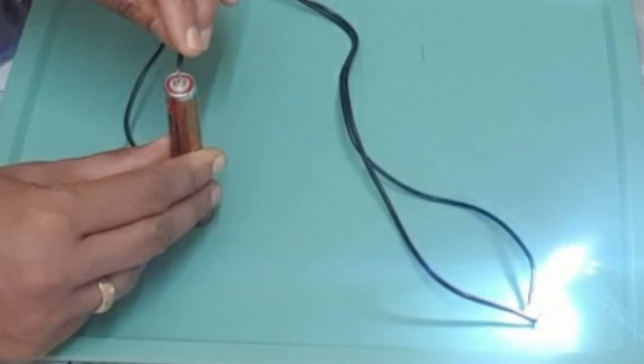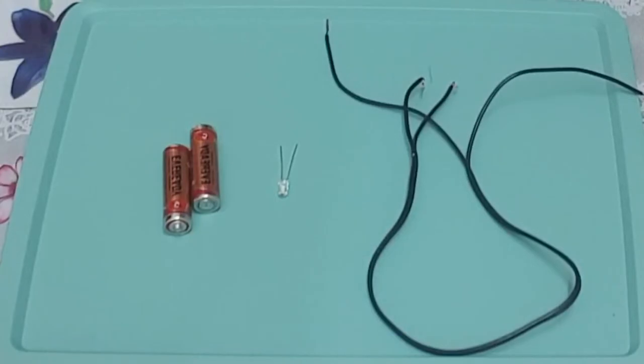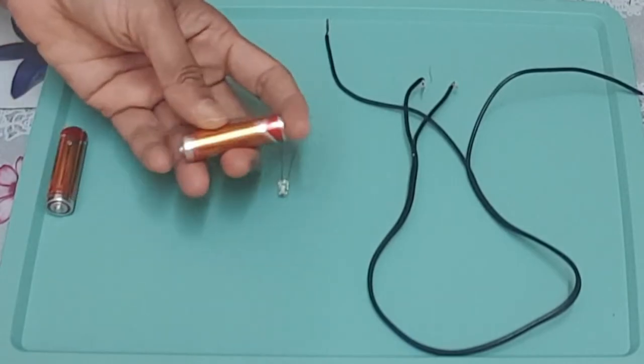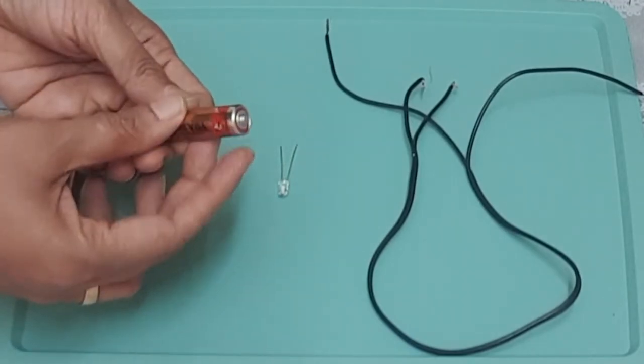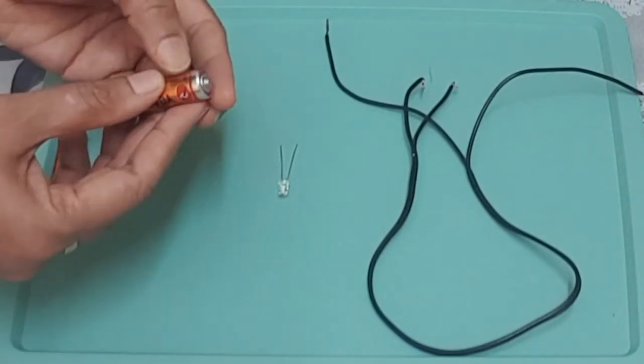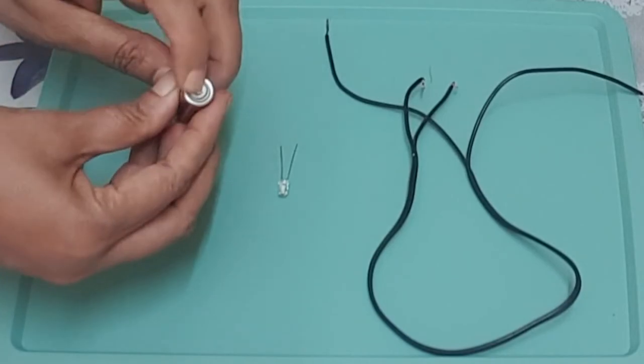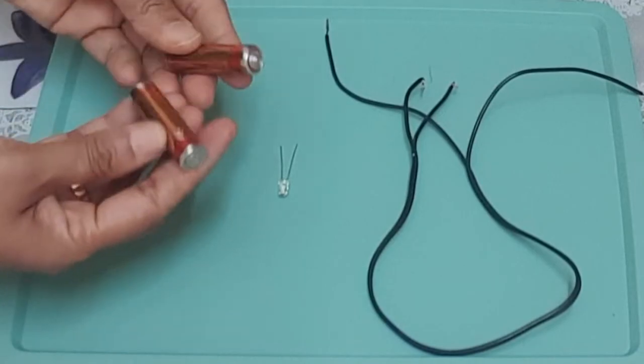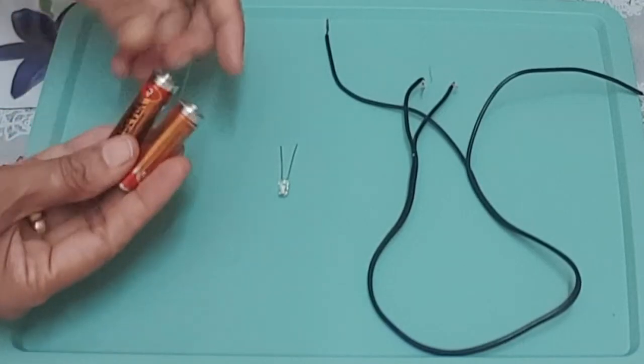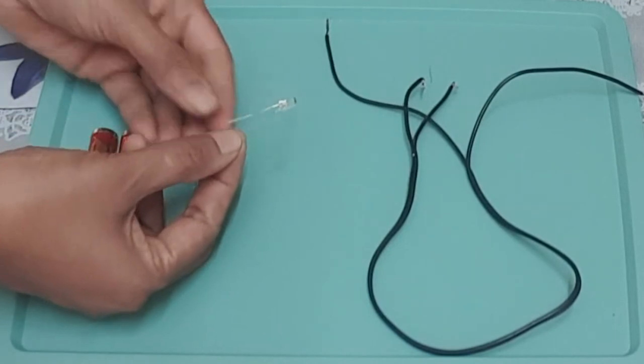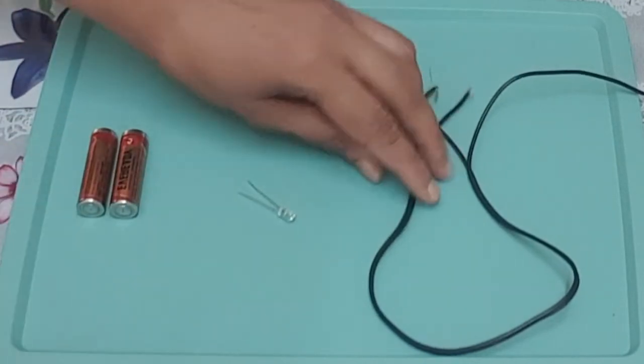Children, let us try to make an electric bulb light up using electric cells. You might have noticed that a cell has a small metal cap on one side and a metal disc on the other side. The metal cap is the positive terminal and the metal disc is the negative terminal. Here I am using an LED bulb, so I need two electric cells.